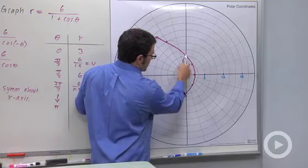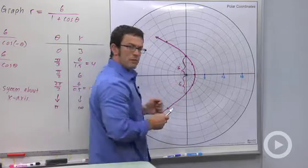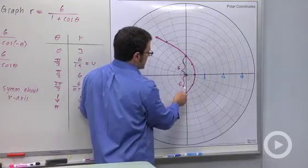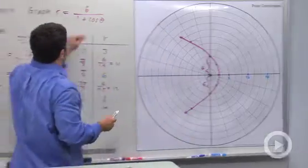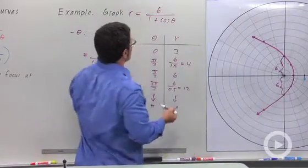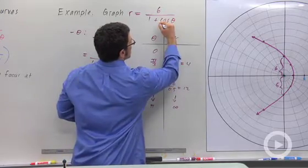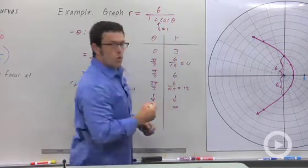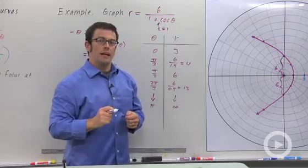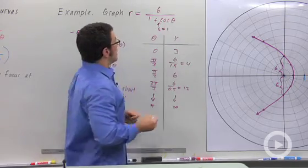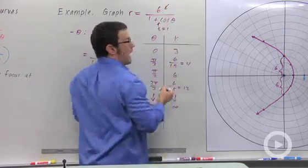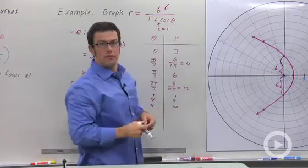This length, the width that passes through the focus, is called the latus rectum. It's 12, exactly twice this value. And so, notice the epsilon value here is 1. Whenever the epsilon value is 1 or negative 1, you'll get a parabola. And this will always be half of the latus rectum, the width of the graph.